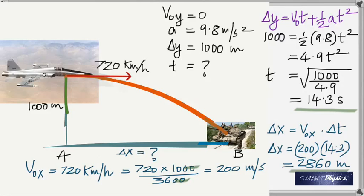So the pilot has to be really intelligent to drop the bomb 2860 meters before the target. If he drops it when it's right above it, it's never going to hit because it's going to go 2860 meters forward.